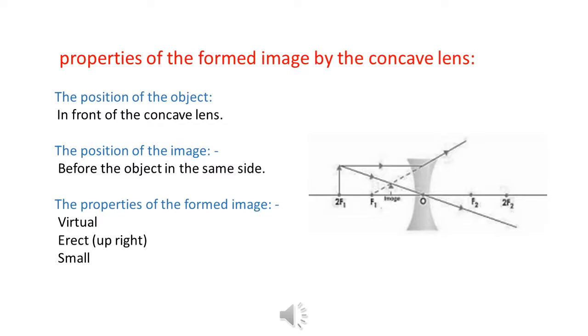The properties of the image formed by the concave lens: wherever the object is placed in front of the lens, the image is always virtual, erect, and small.